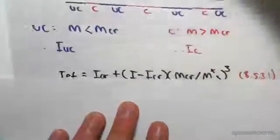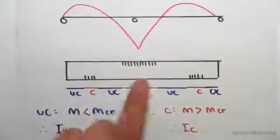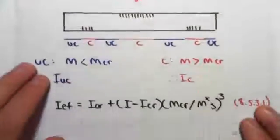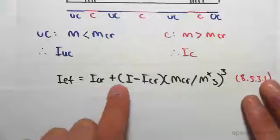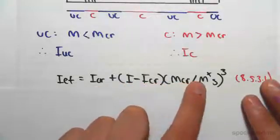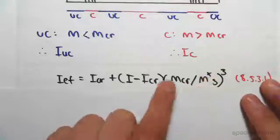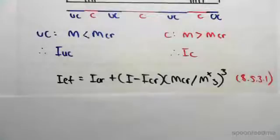is it comes up with this formula to find the effective I-value, which takes into consideration the variation of cracked and uncracked values. The I effective value is given as I cracked plus (I uncracked minus I cracked) times (M cracked over M star) to the power of three. Just to show you in the standard,